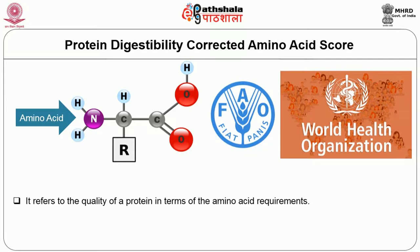PDCAAS refers to the quality of a protein in terms of amino acid requirements. Proteins are required for growth and metabolism, and they contain amino acids. There are 20 amino acids which are building blocks for proteins. The human body can synthesize some of them — these are called non-essential amino acids — whereas some amino acids the body cannot synthesize; such amino acids are called essential amino acids, and we must consume them through our diet.